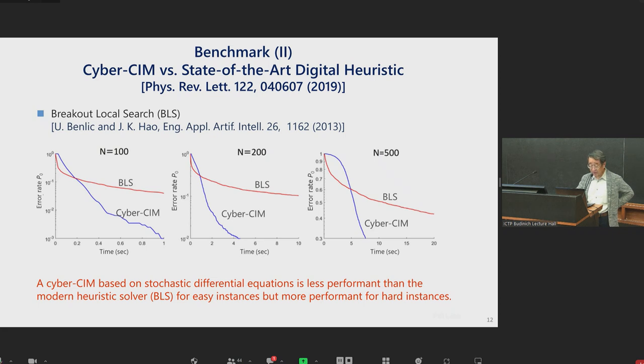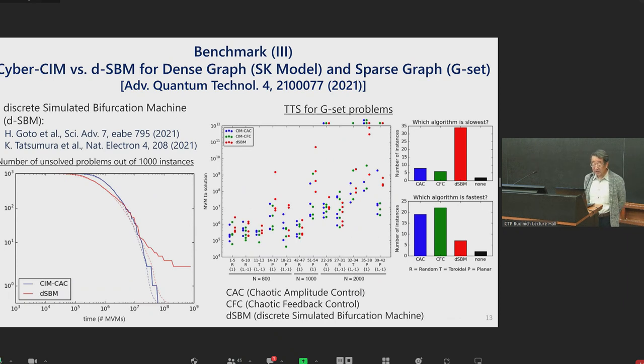Last benchmark result is cyber CIM implemented on GPU versus discrete simulated bifurcation machine. This discrete simulated bifurcation machine is very similar to CIM, open dissipative system, digital platform, even though it was originally invented as a superconducting unitary device, but now it is a digital heuristic. The left bottom panel compares CIM and discrete simulated bifurcation machine. The trend is actually similar to the previous slide. When the given program instances are easy, discrete simulated bifurcation machine is faster. But when the program instance is really hard, then CIM is actually better to find a solution.